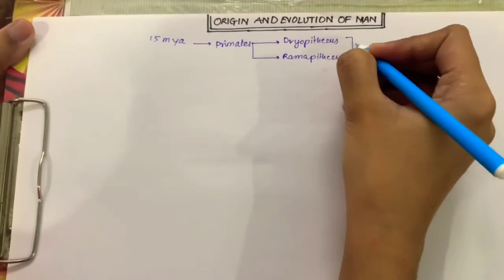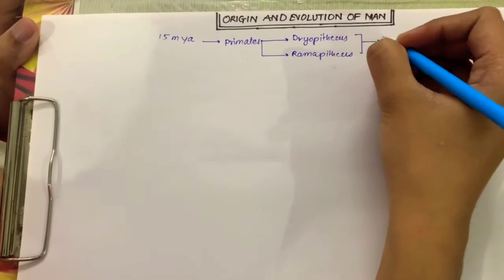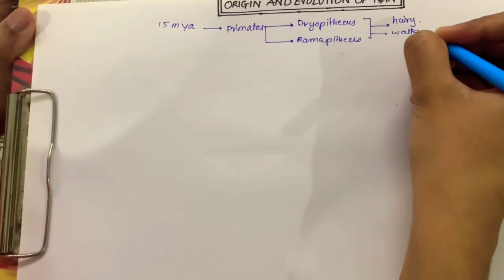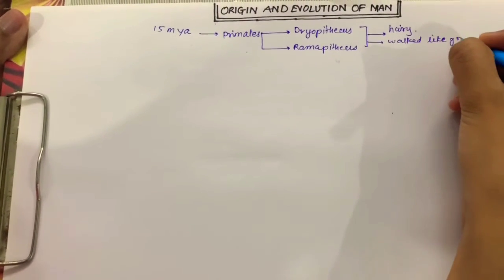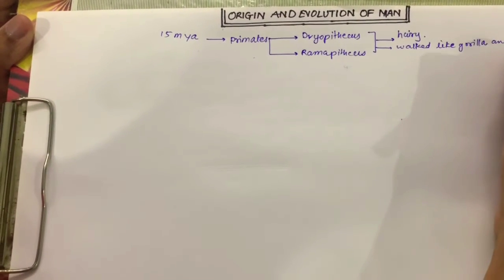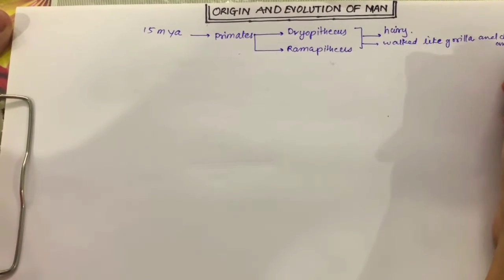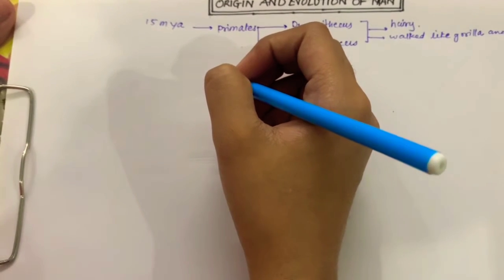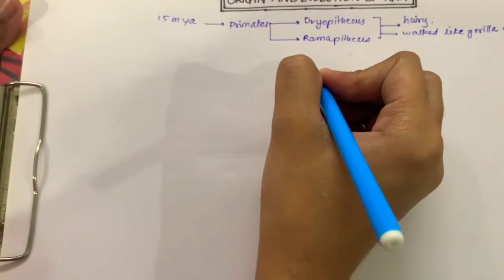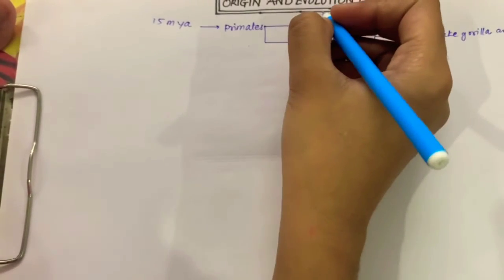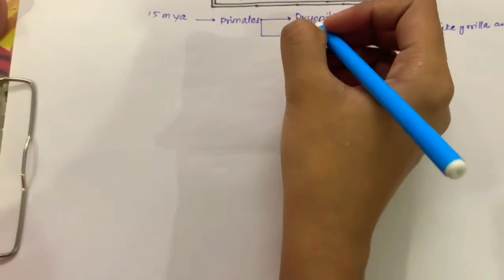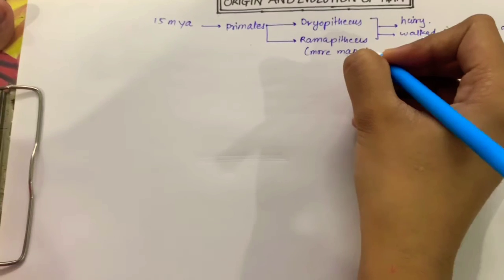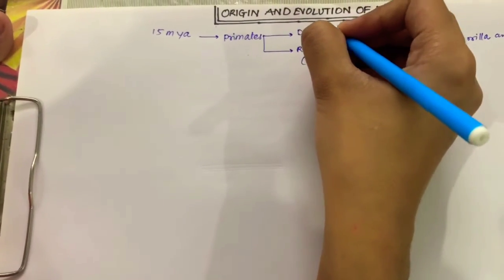There were some common features between them: they were hairy and walked like gorillas and chimpanzees. There was one difference which is mostly asked in both board exams and NEET examinations - Dryopithecus was more ape-like and Ramapithecus was more man-like. For remembering, Rama means man.